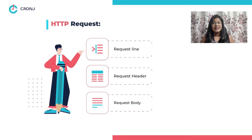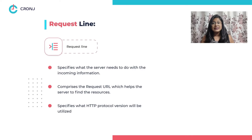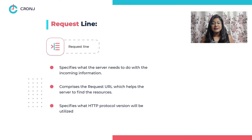What are the various parts of an HTTP request? Every HTTP request has three main elements: the request line, the request header, and the body of request. The request line helps in three ways: firstly, it specifies what the server needs to do with the incoming information; secondly, it comprises the request URL which helps the server to find the appropriate resources.